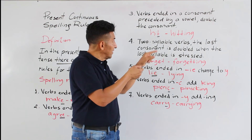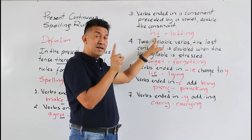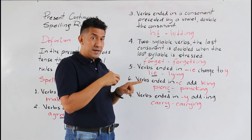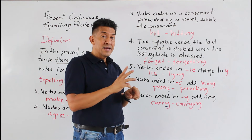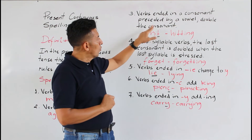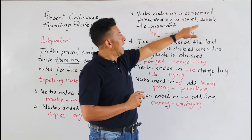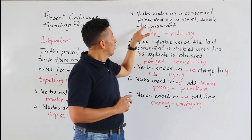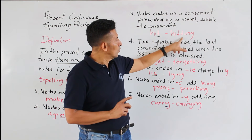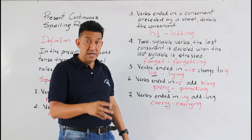A la consonante T le antecede una vocal — en este caso la vocal es la letra I. Como cumple nuestra regla, lo que dice es double the consonant. ¿Cuál es la consonante? La T. Por eso le llamamos doble T: hitting. ¿Ok?